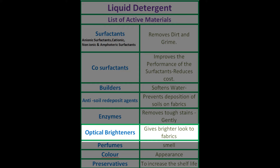Next, optical brighteners. Optical brighteners are not surfactants, not cleaning materials, not builders. But even though they are not cleaning agents, they are important — they will improve the physical appearance of the washed clothes. They will make colored clothes brighter and white clothes whiter.